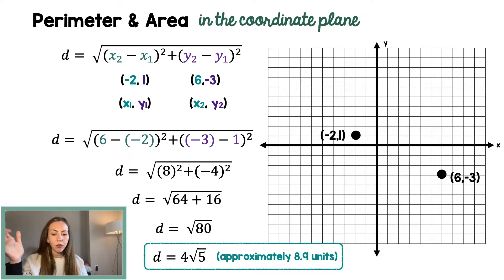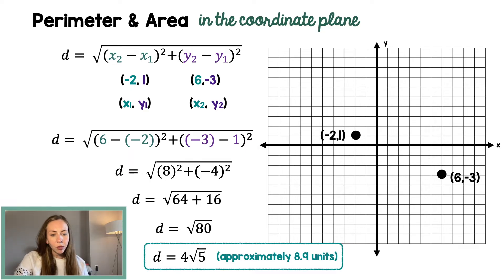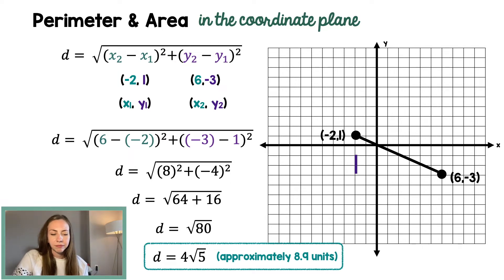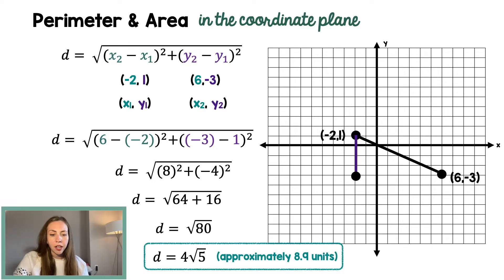If you simplify that, it's 4√5, or approximately 8.9 units. So our final answer — you could leave it as a simplified radical, 4√5, or if your teacher was asking you to approximate, you could do it as 8.9 units. So this distance is about 8.9 units long. The other way to think about this is using the Pythagorean theorem: the vertical distance is 4 and the horizontal distance is 8, so 8² + 4² = c². You'll get the right answer either way.